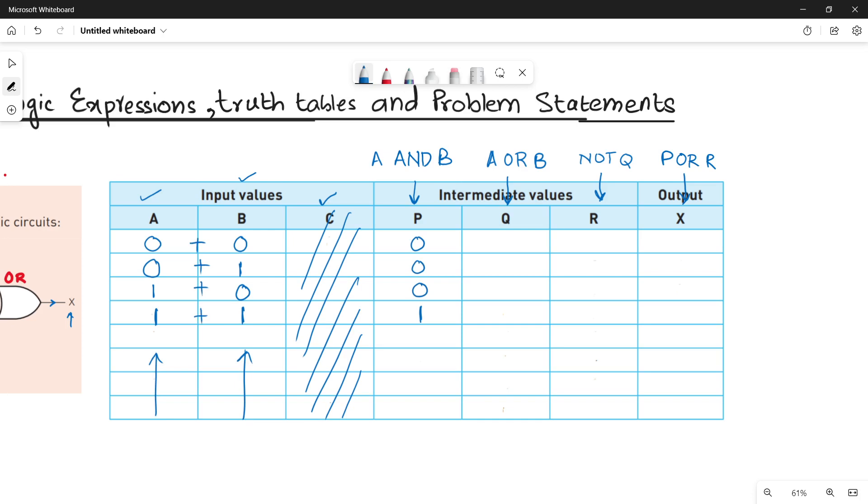To calculate Q, 0 plus 0 is 0, 0 plus 1 is 1, 1 plus 0 is 1, 1 plus 1 is 1. For R, what you have to do, you have to invert the values of Q because it's written for R, it is NOT Q.